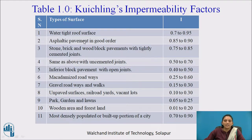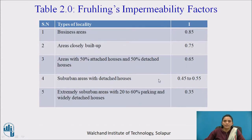Table 1 provides guidelines for the impermeability factor for different types of surfaces; it lists 11 types of surfaces and gives the range of impermeability factor for each. Table 2 provides guidelines for the impermeability factor for different localities or types of area.